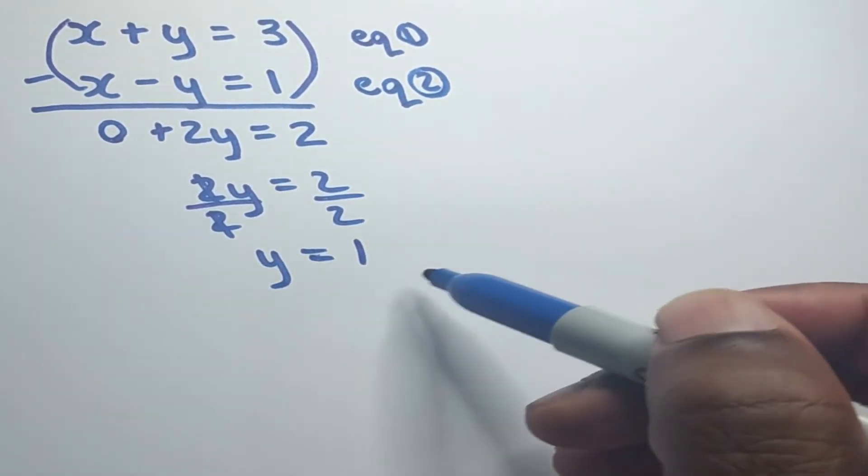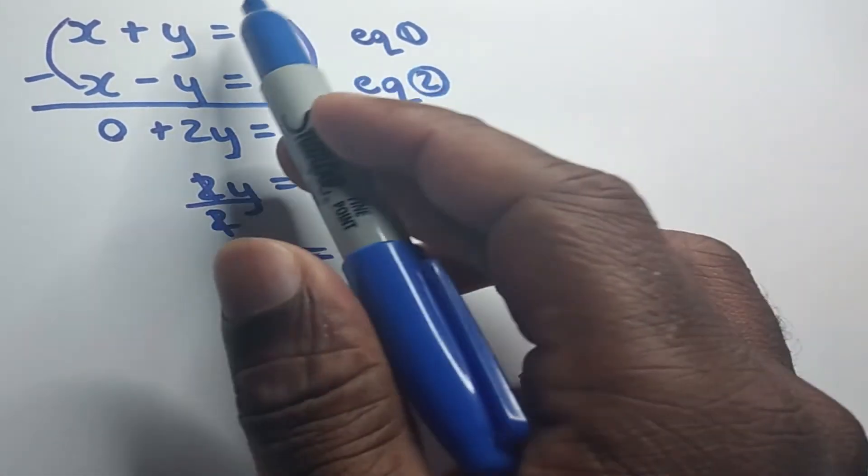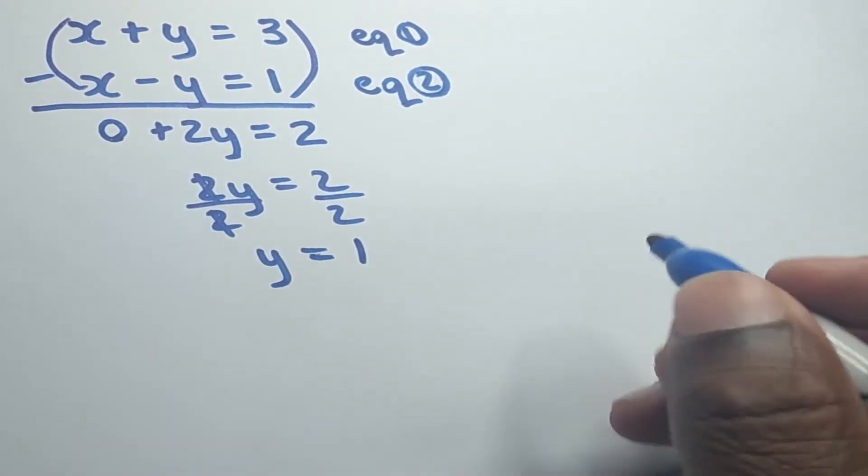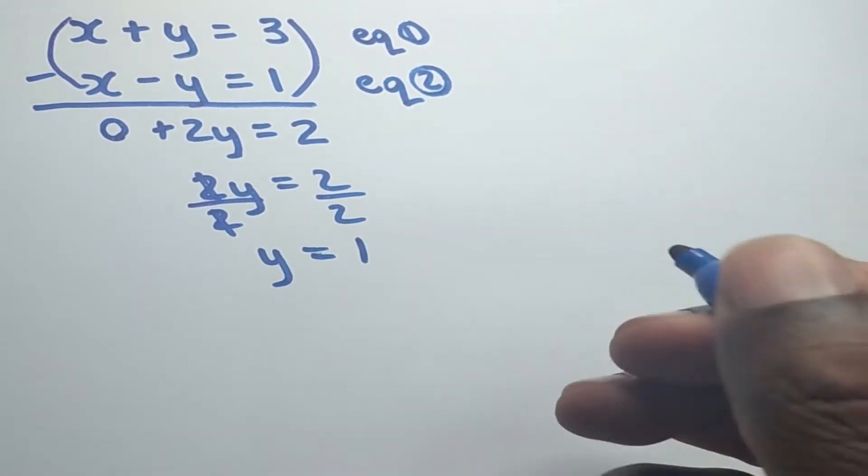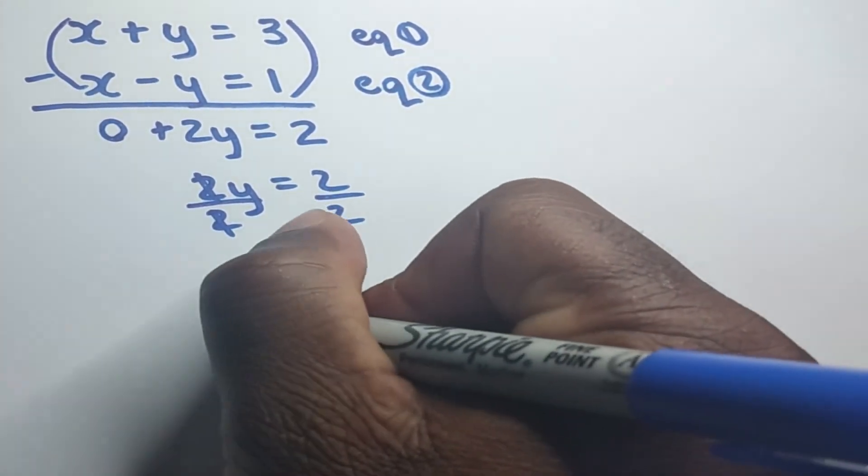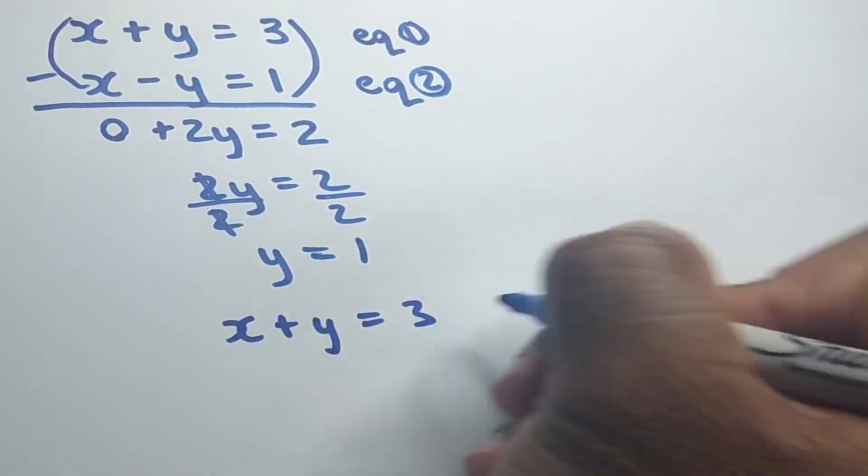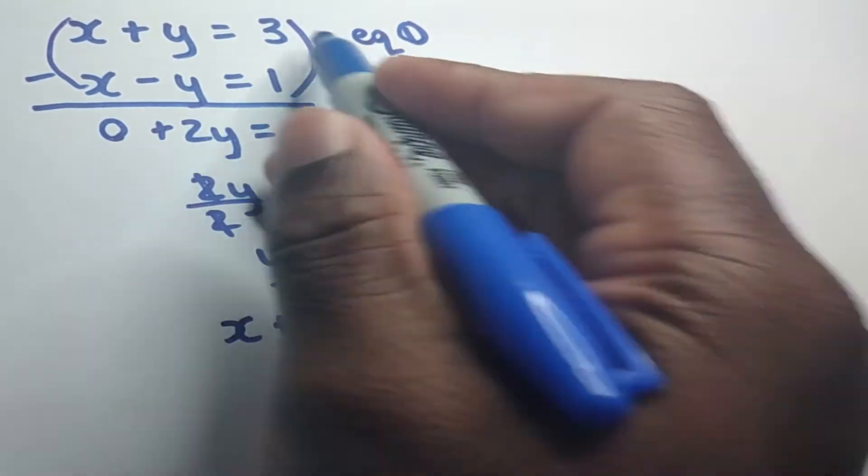Now, what we are going to do is to substitute our y value, which is 1, in either equation 1 or equation 2 to obtain our x value. So let's use equation 1. Of course, you could have used equation 2 as well, but let's just use equation 1. And that's x plus y is equal to 3.